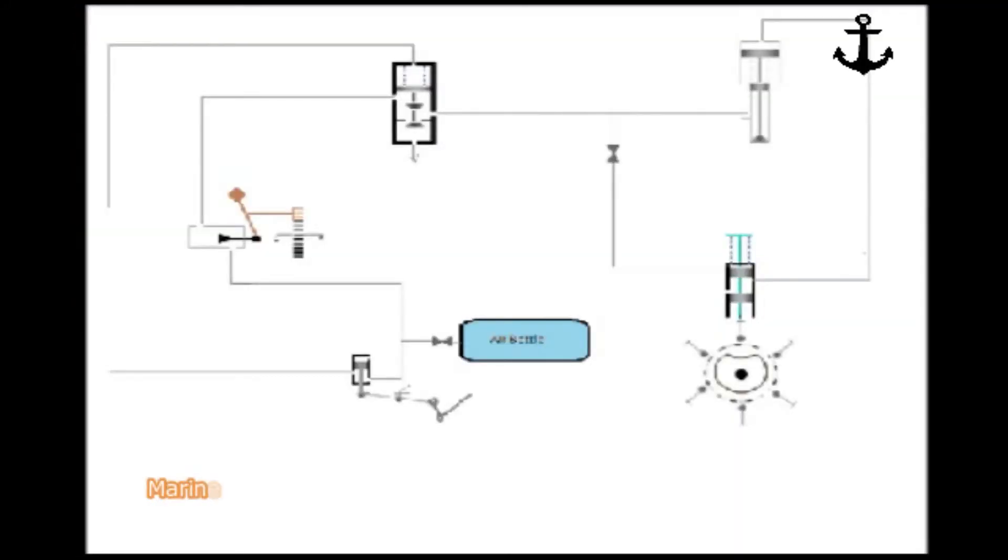Here's the line diagram for the main engine air starting system which comprises of an air bottle for starting air, a pilot valve for commencing the operation, a turning gear interlock, an automatic air start valve, an air distributor, and a cylinder head starting air valve.